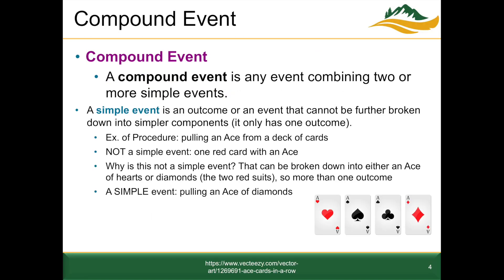To illustrate simple versus not-simple events, consider the procedure of pulling an ace from a deck of cards. A non-simple event would be pulling one red card with an ace, because that can be further broken down into pulling either an ace of hearts or an ace of diamonds — there's more than one possible outcome. A simple event from this procedure would be pulling the ace of diamonds specifically; that can't be broken down further, and there's only one possible outcome.